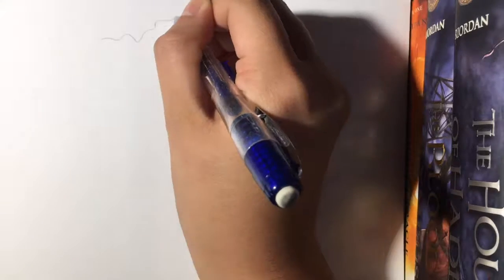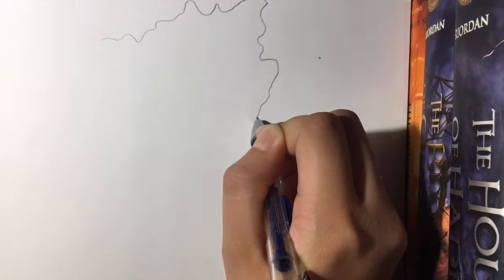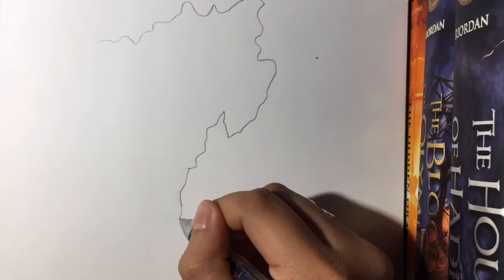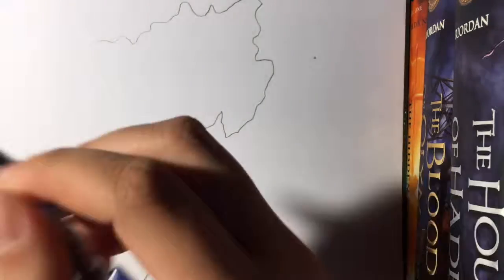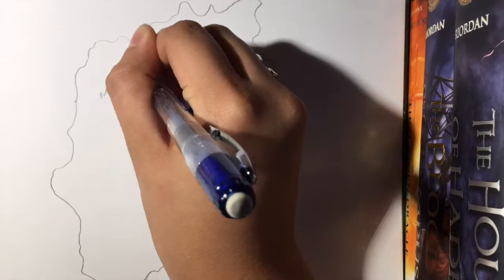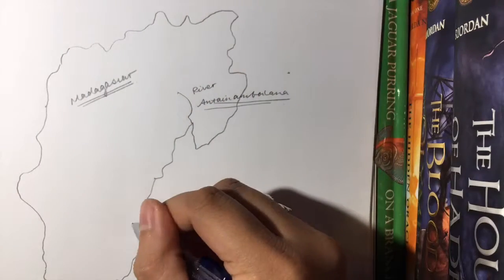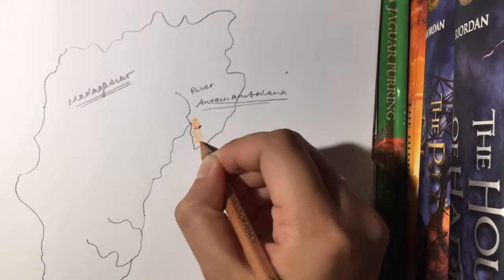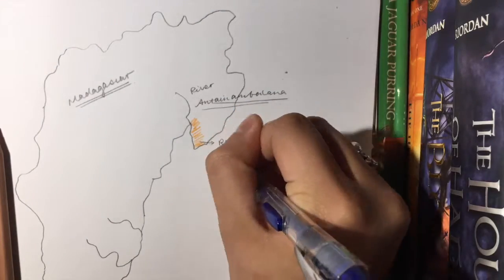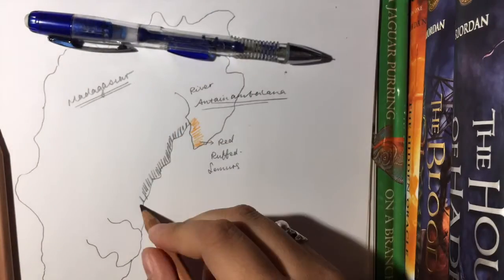The island nation of Madagascar is home to over 9,000 endemic plants and nearly 800 endemic vertebrates, including a variety of palm, baobab, and chameleon species. Madagascar's isolation from other landmasses has allowed for the evolution of these endemic species, including a group of the most endangered mammals on Earth, the lemurs.